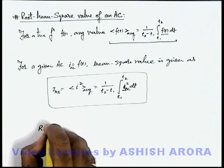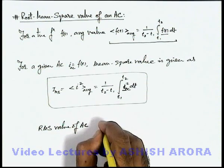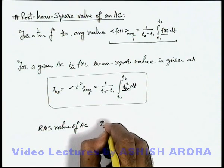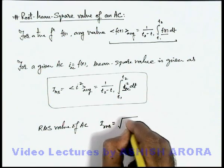If we wish to calculate the RMS value of AC, this is root of mean of square. This IRMS can be calculated as root of i mean square,